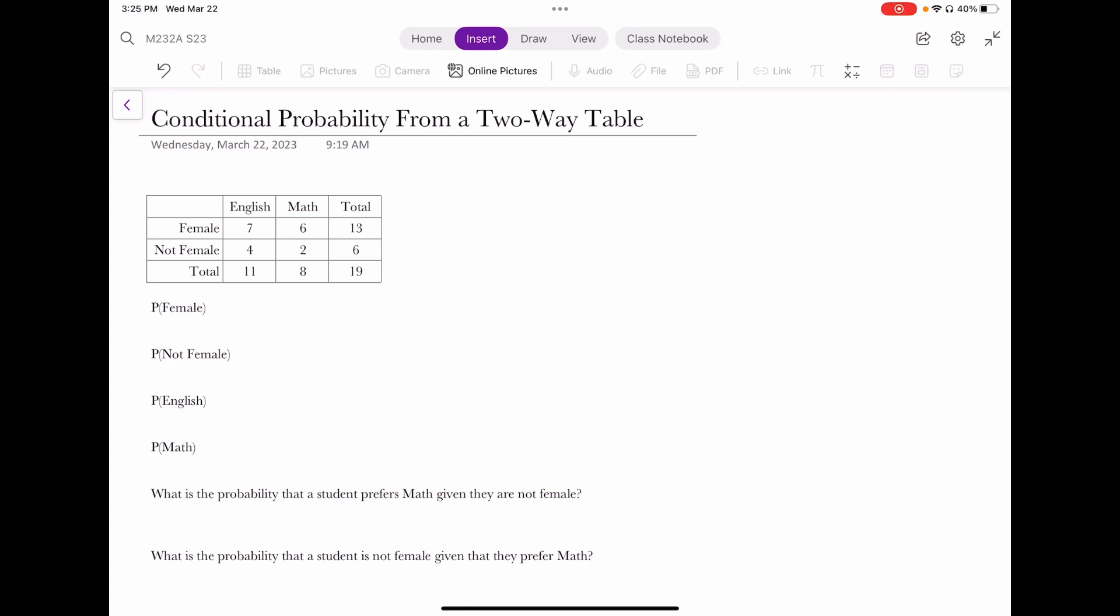And so we had 19 students in the class and we have the totals filled in as well. There were 13 females in the class, 6 who were not, 11 preferred English, and 8 preferred math, and both of those added up to 19.